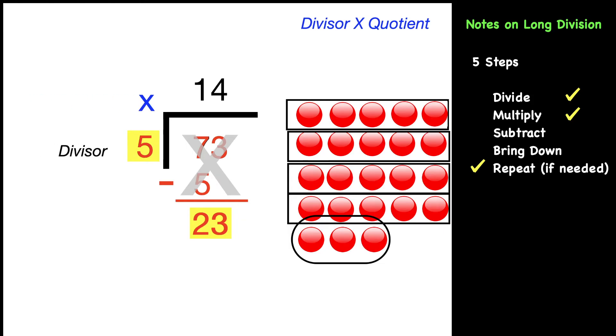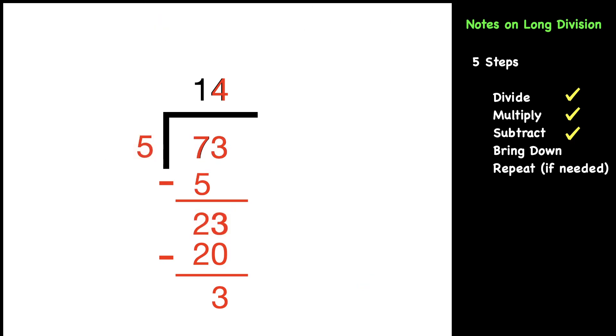Multiply the divisor times the quotient. Five times four, not 14, just the four, is 20. The 20 we write below the 23. Now we're ready to subtract. 23 minus 20 would be three. We see that we had the three left over.